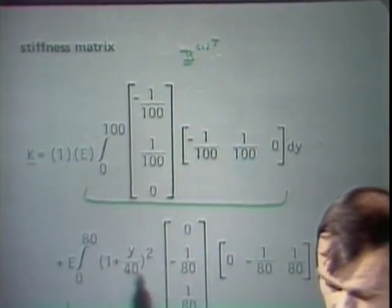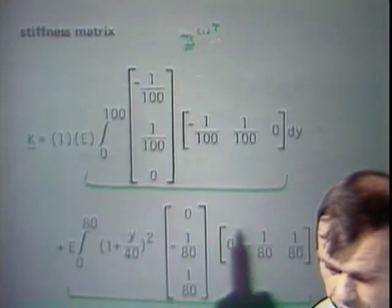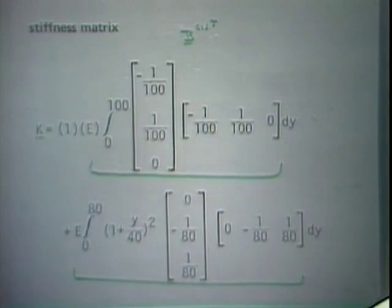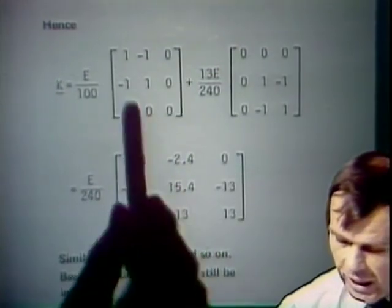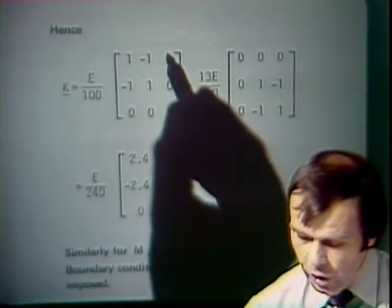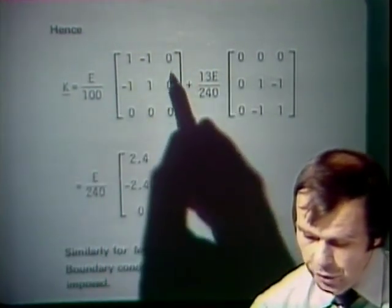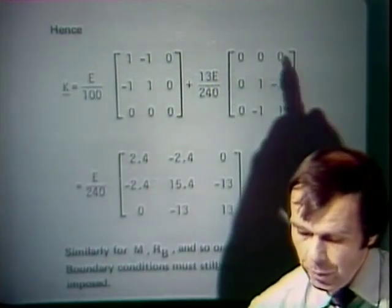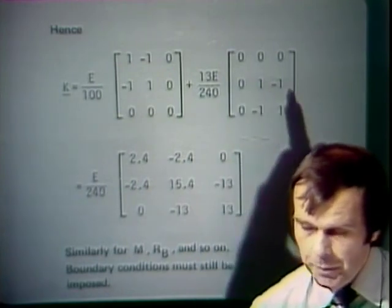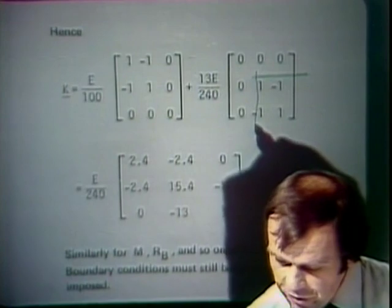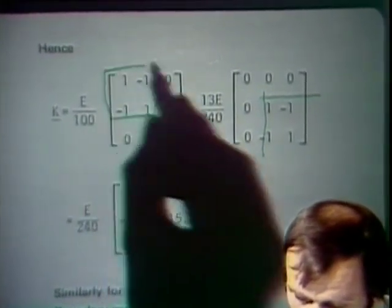Knowing the non-zero compacted element stiffness matrices and knowing into which degrees of freedom they must be placed in the assemblage phase, we can directly assemble the total stiffness matrix. In theory, we are still performing the summation as pointed out in the direct stiffness procedure — the important point is that we have established the K matrix corresponding to this system.